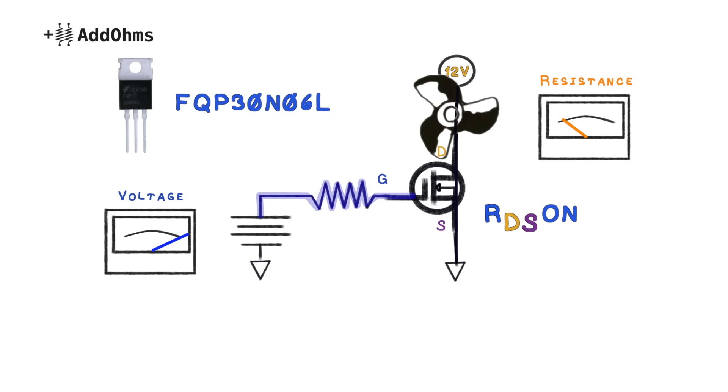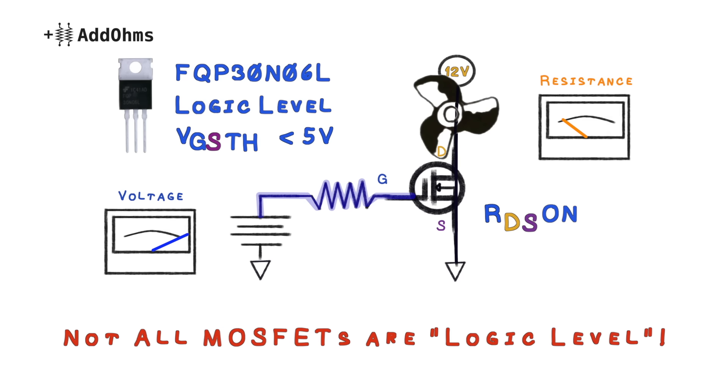We picked this MOSFET on purpose. It is known as a logic-level MOSFET, because the voltage from gate to source is lower than 5V. In other words, the threshold to turn the MOSFET on is low enough to be used by an Arduino or Raspberry Pi. Not all MOSFETs are logic-level compatible, so it is very important to check what the VGS threshold is before using it in your circuit.